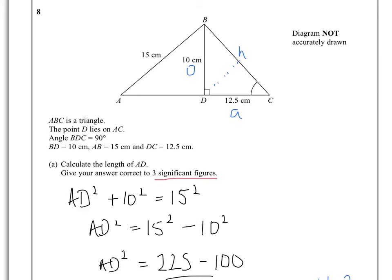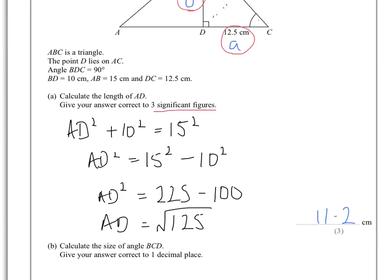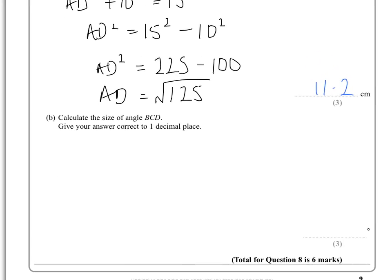So what do we have? We have the adjacent, we have the opposite, and we're trying to work out this angle. So we have O and A, and remembering SOH CAH TOA. So we have the opposite and the adjacent, so we'll use tan.